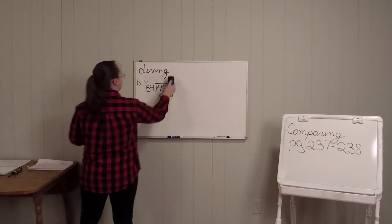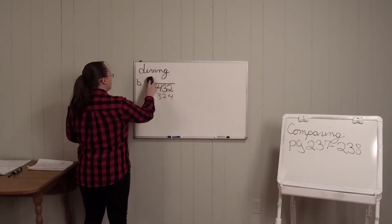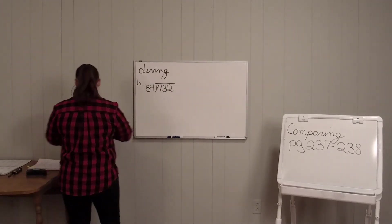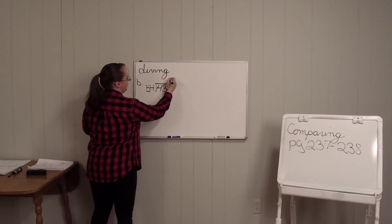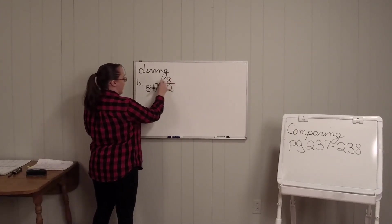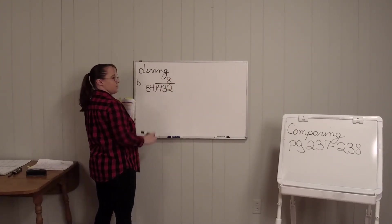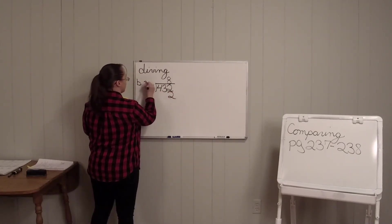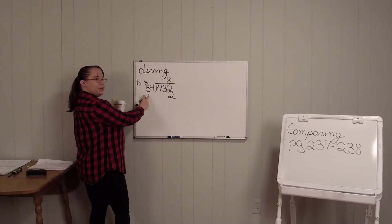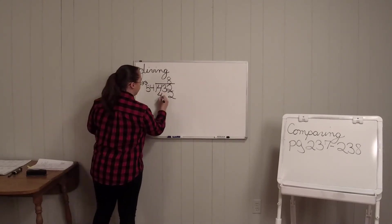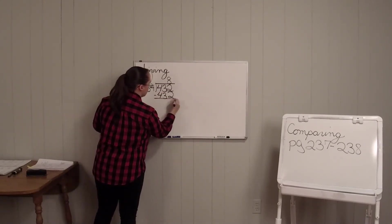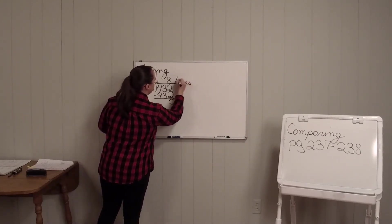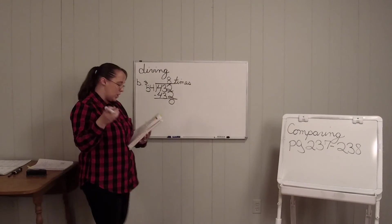So that's all it is, is division. So you would just see. 8 times 4 is what? 32. 8 times 5 is 40 plus 3 more is 43. So it was 8 times.